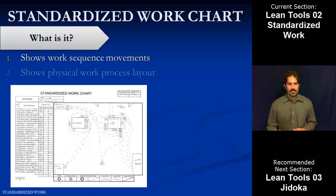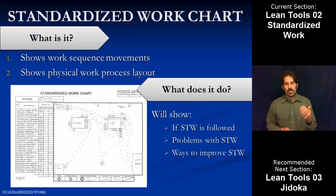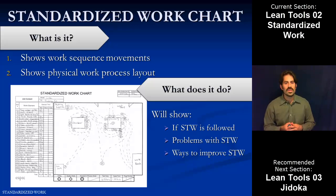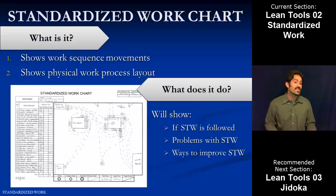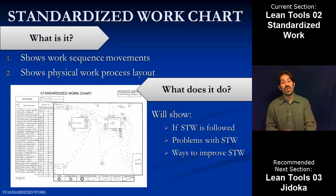The standardized work chart shows the sequence of movements — the physical work process layout, like a map — and how the team member moves within their space as they accomplish the individual steps of their standardized work. We can see if standardized work is being followed: if at step five they should be over here but they're in another area of the work cell, we know there's a discrepancy and can start asking questions. We can also see if there are problems with the standardized work — for instance, if it tells them to do something they can't physically do. And we'll see ways to improve it, such as if they're walking in circles all day, maybe we can change those steps so they make fewer stops.